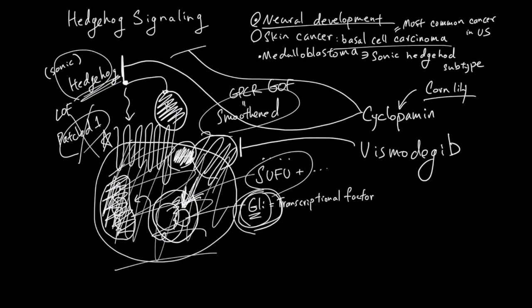No smoothened releasing GLI. No hedgehog signaling. So overall, cyclopamine and vismodegib both block hedgehog signaling.